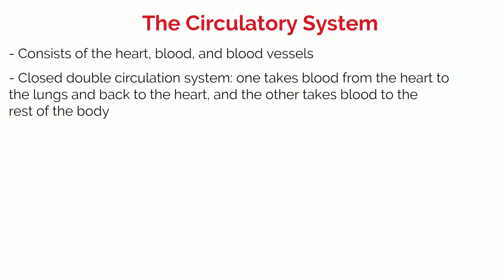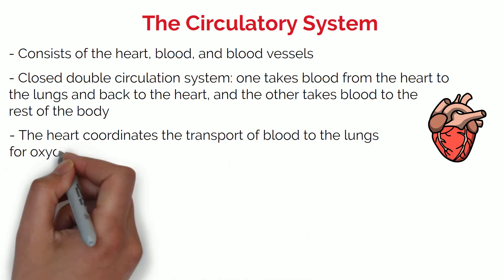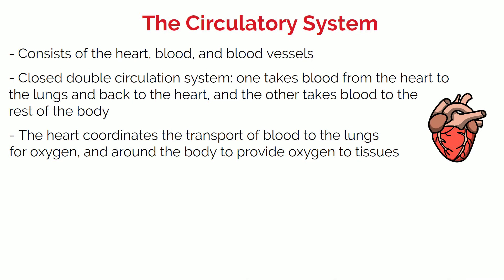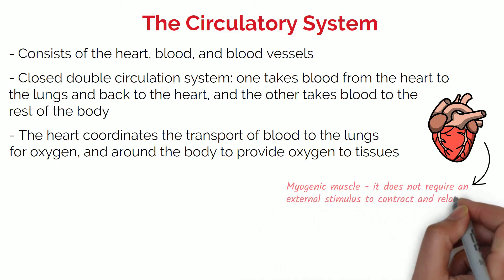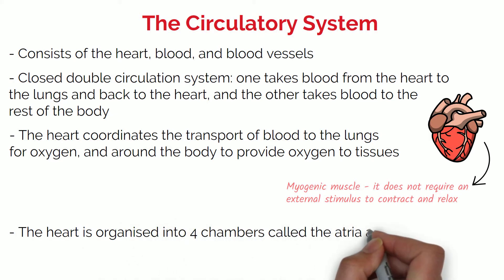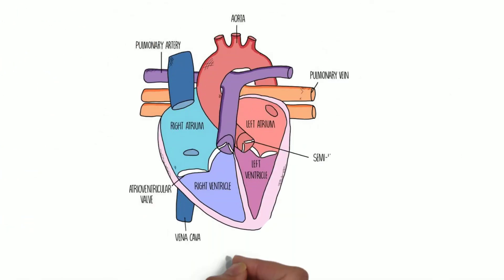At the heart of the mammalian circulatory system is the heart. The function of the heart is to coordinate the transport of blood to the lungs for oxygen and around the body to provide oxygen to tissues. The heart is a myogenic muscle, which means it does not require an external stimulus to contract and relax. The heart is organised into four chambers called the atria and ventricles, divided into two sides. The atria and ventricles must contract and relax in a coordinated rhythm to keep blood flowing around the body.